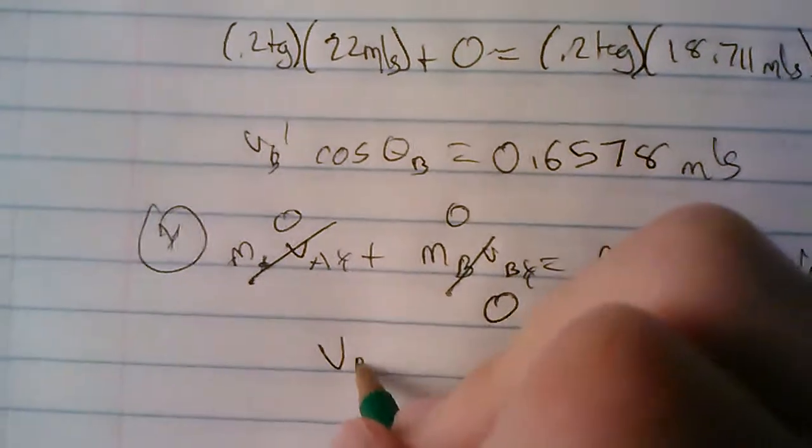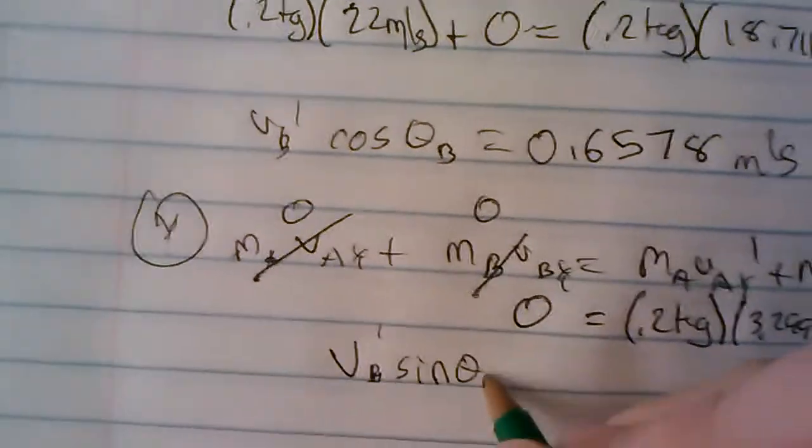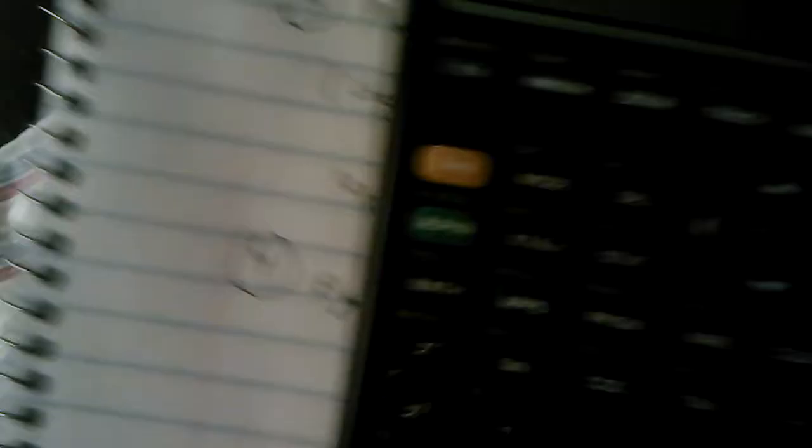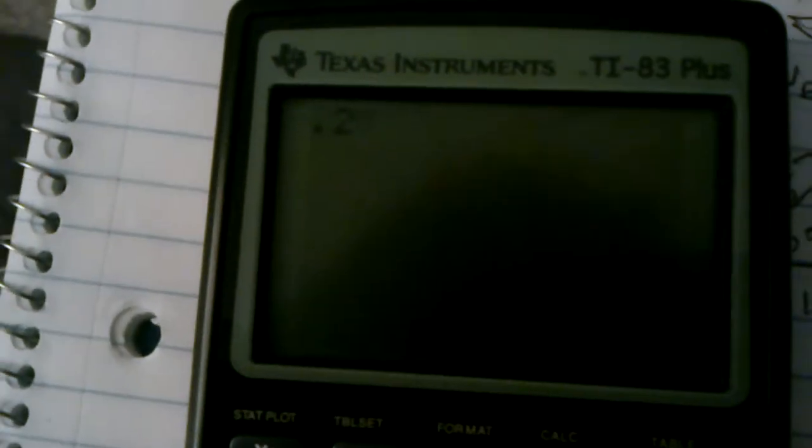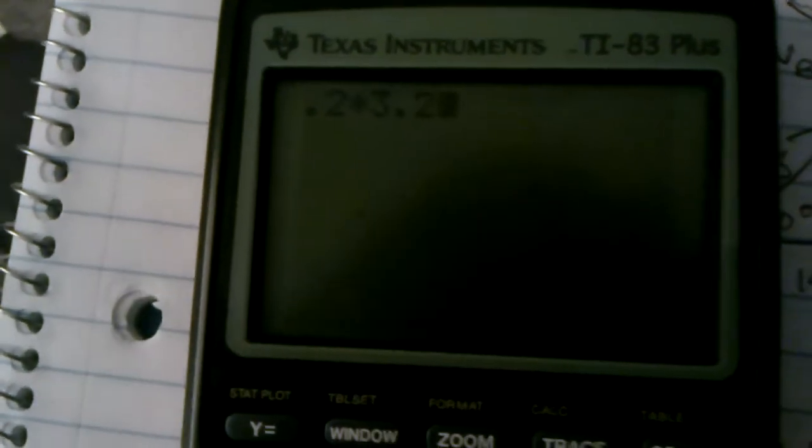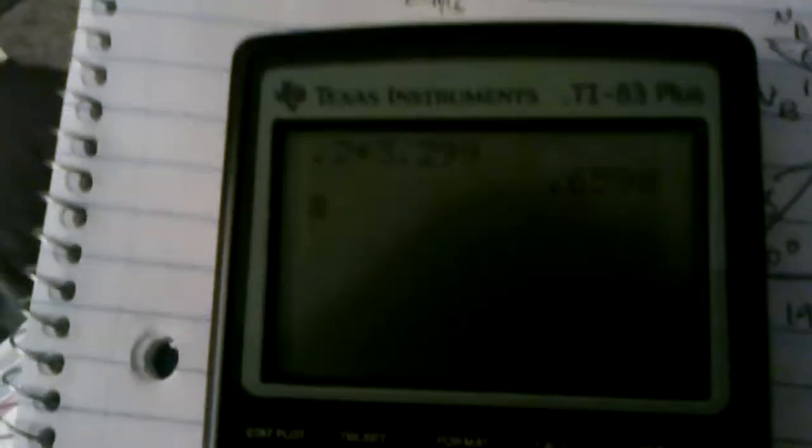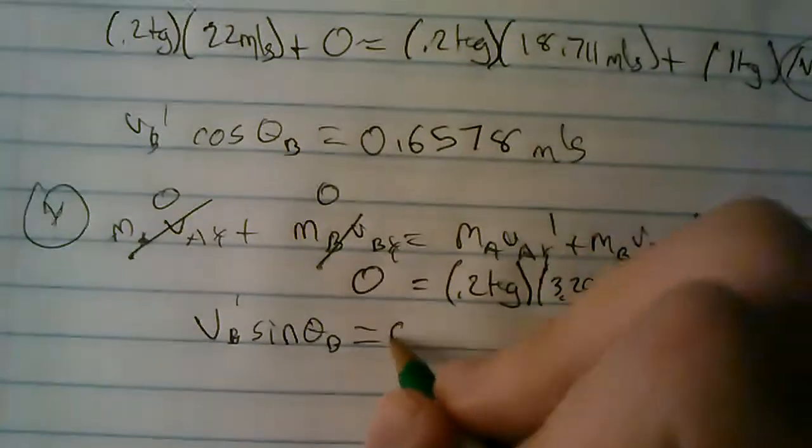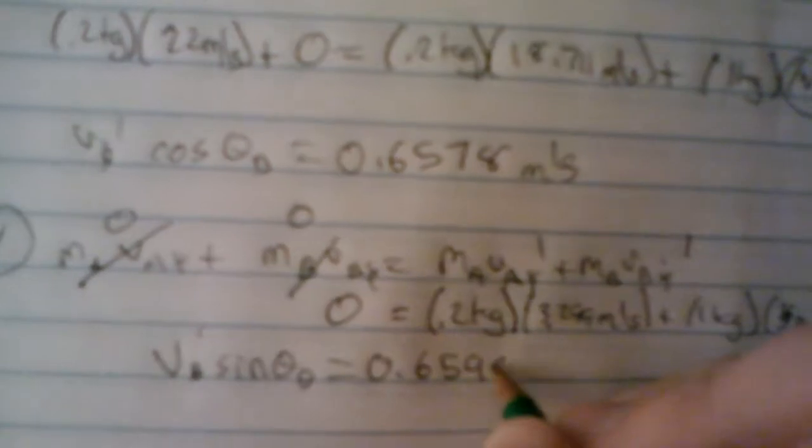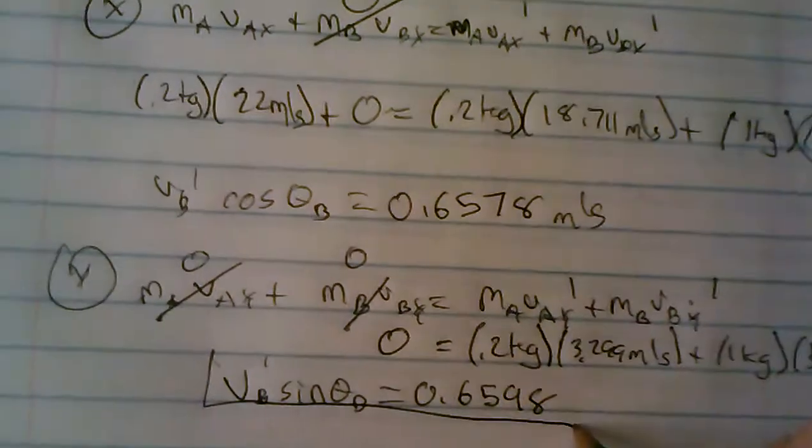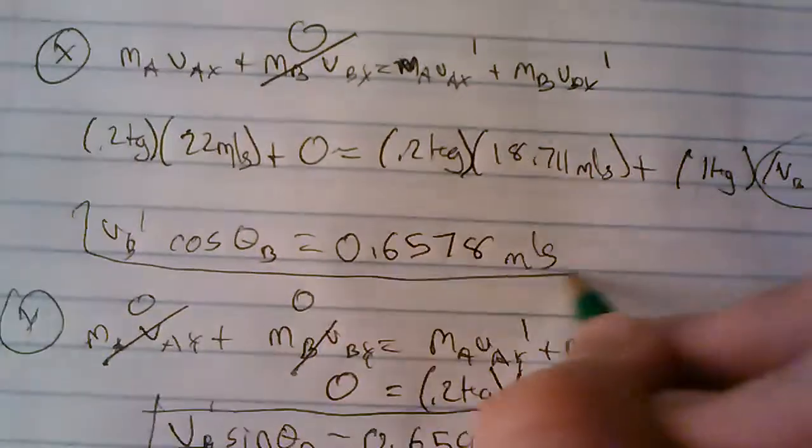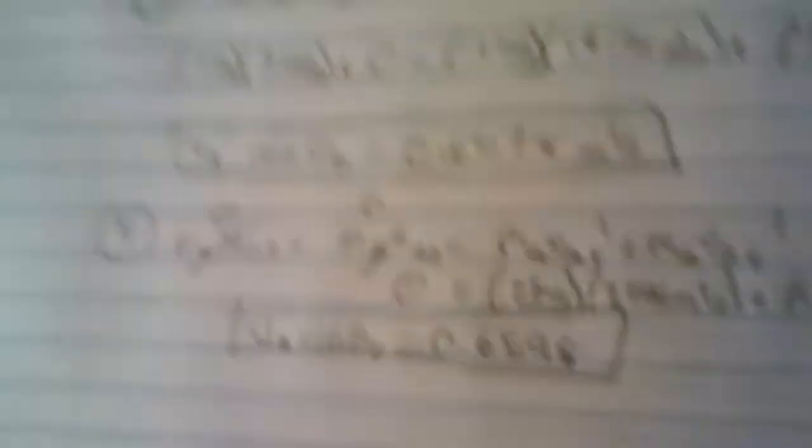So solving for VB sine theta B, that equals, we take 0.2 times 3.299, divided by 1, we get a shockingly similar answer, they're actually the same almost. So this one is 0.6598, which is really close to the other one. So these are our two equations we're going to solve, and I have checked this, I did this beforehand, so I didn't screw anything up.